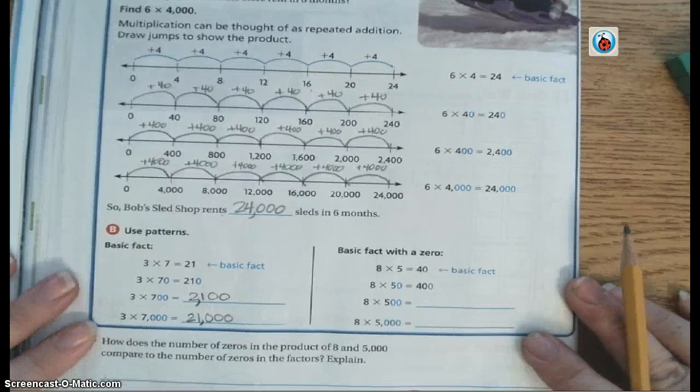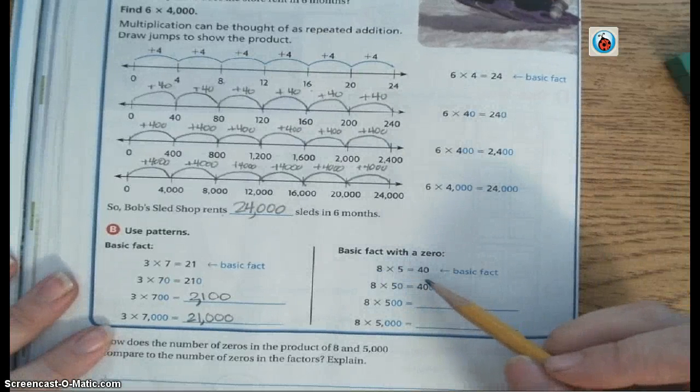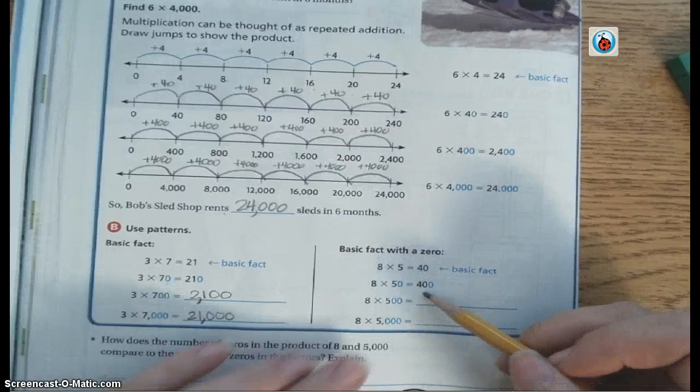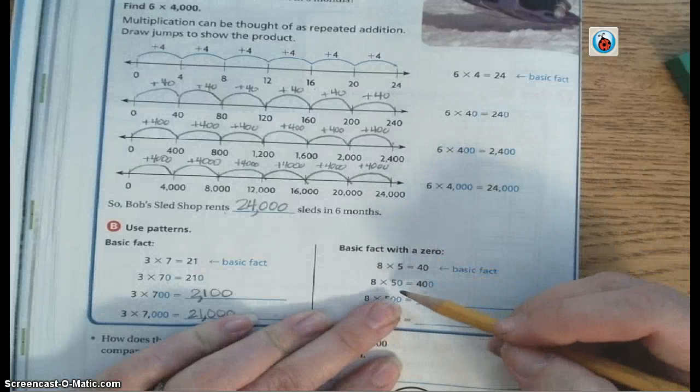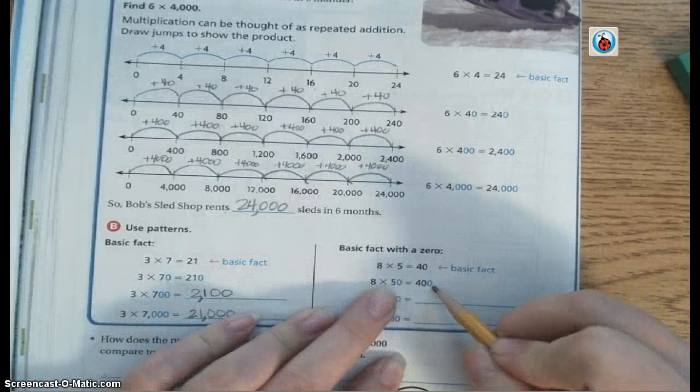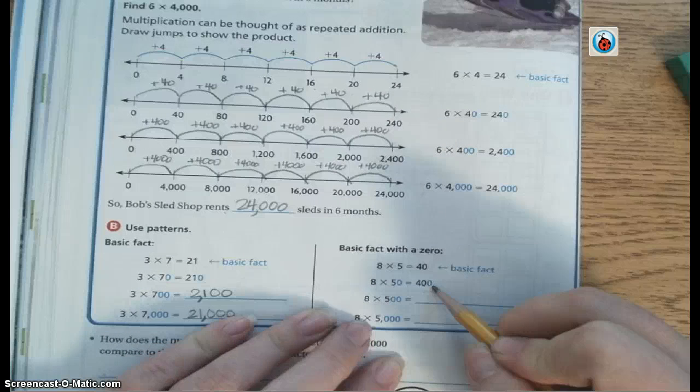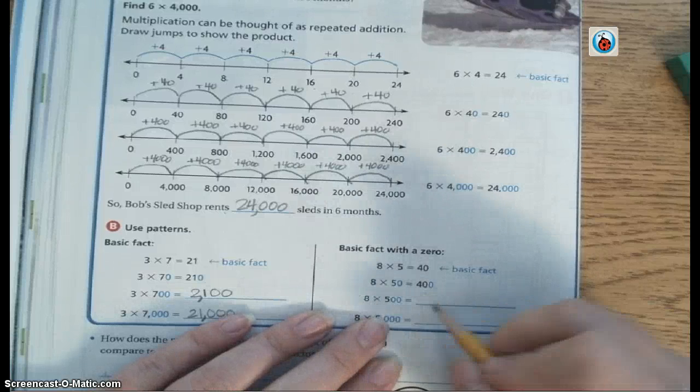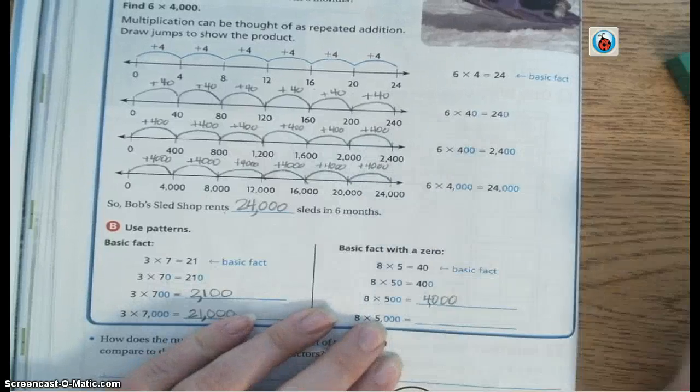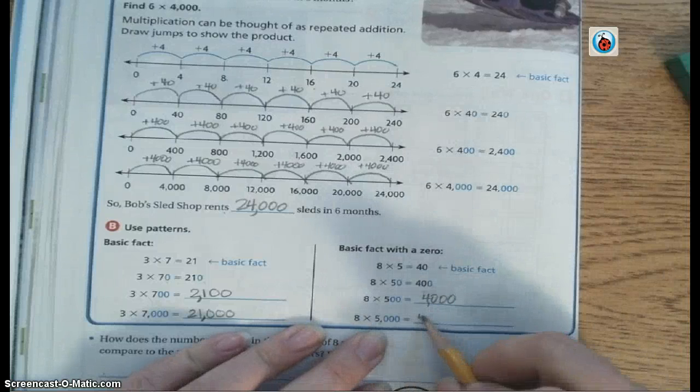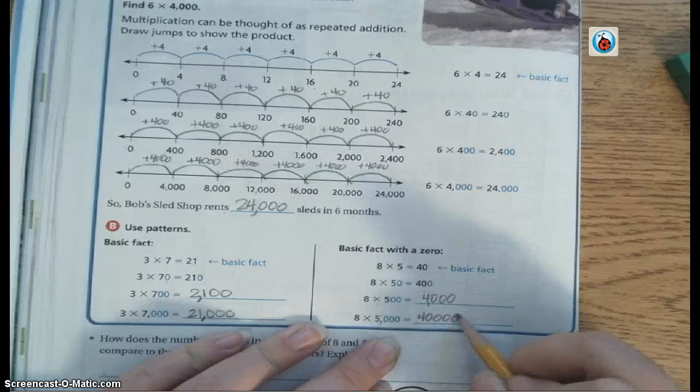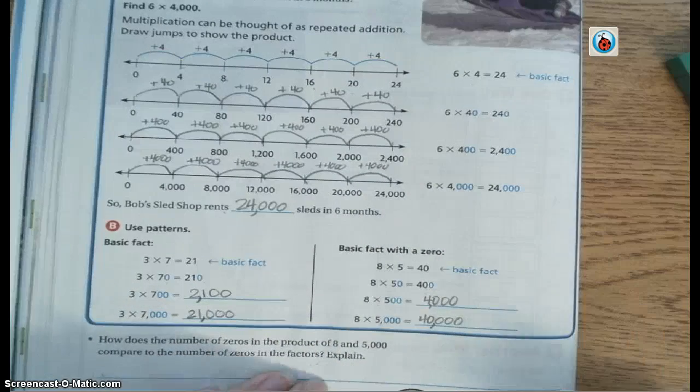We're going to do another example. This example is just a little bit different because this answer that we get for our basic fact already has a 0 in it because 8 times 5 is 40. So now when I go to do my work, when I move up and put an extra 0 on there, it's still 8 times 5 is 40, and I add my extra 0 for the 0 in 50. So on this one, 8 times 5 is 40, and then there's 2 0s on 500, so that would be 2 more 0s. So my answer is 4,000. 8 times 5 is still 40, and there's 3 0s, so I'm adding 3 extra 0s. So my answer is 40,000.